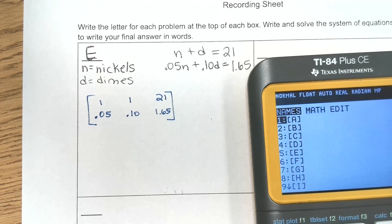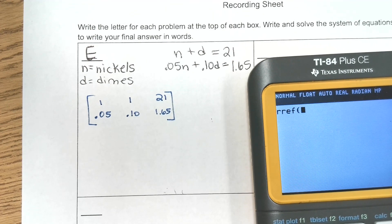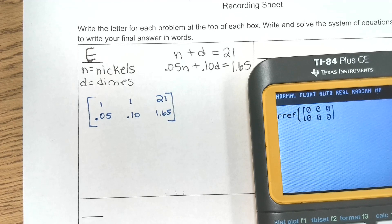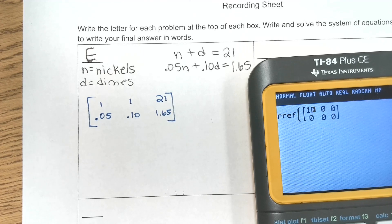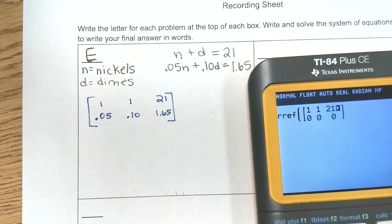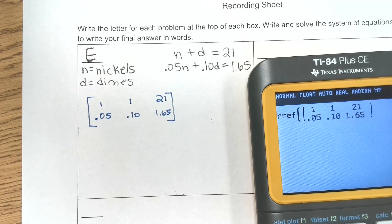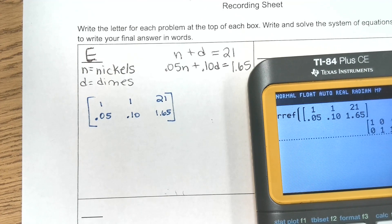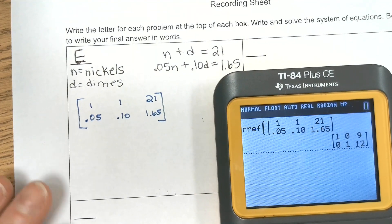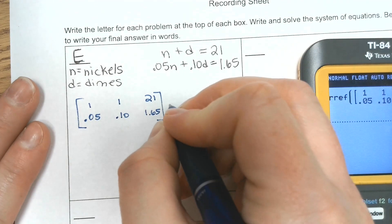So write your output matrix. Second matrix, go to math, go to RREF, alpha zoom, two by three, one, one, twenty-one, .05, .10, one, sixty-five. So write your output matrix.